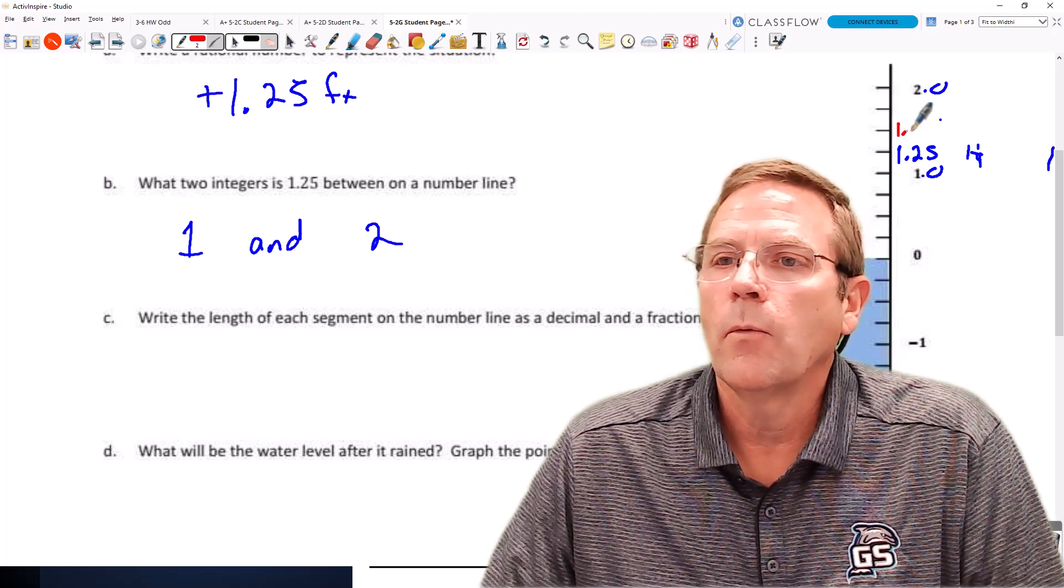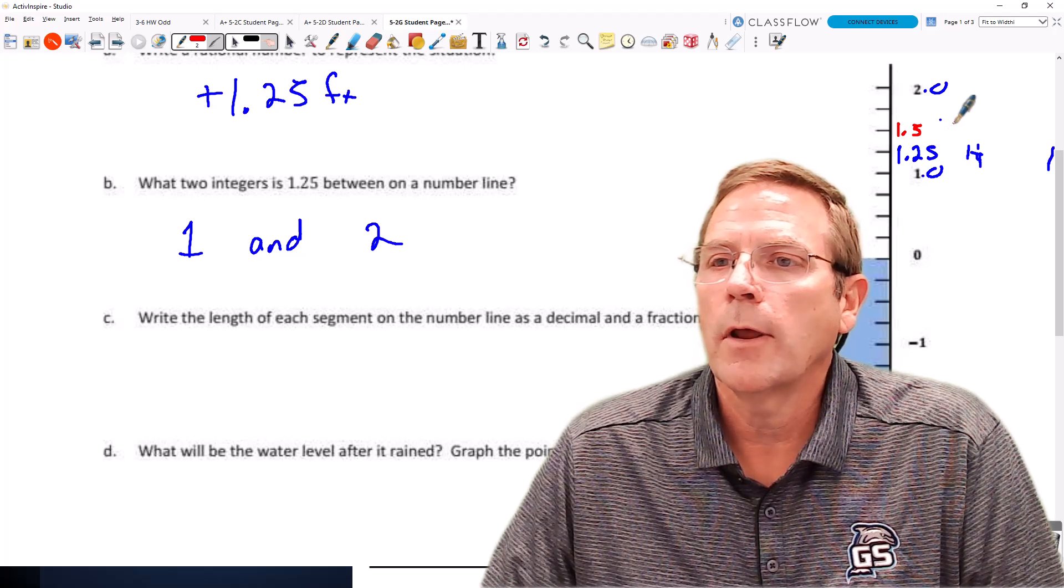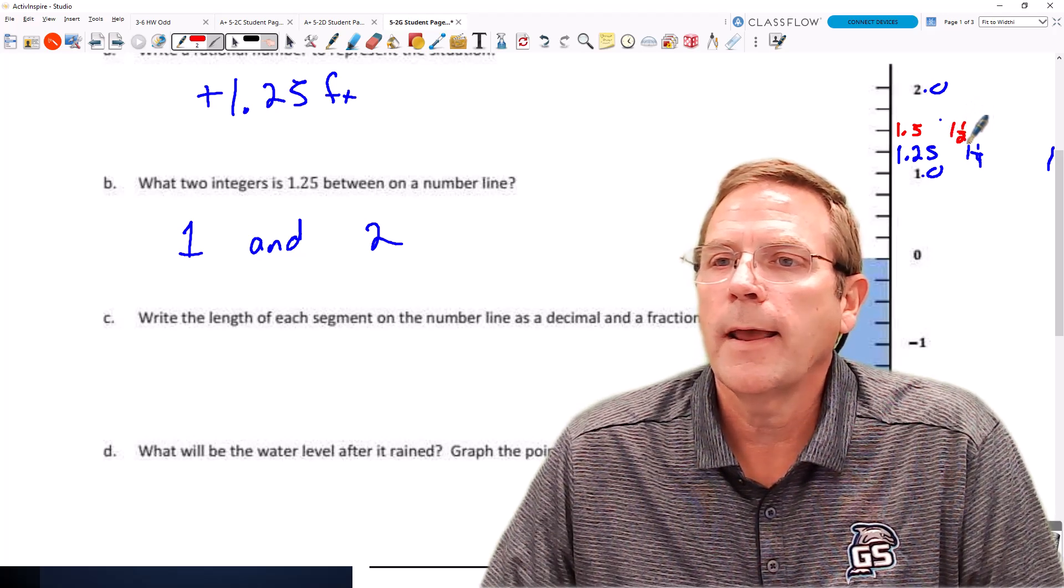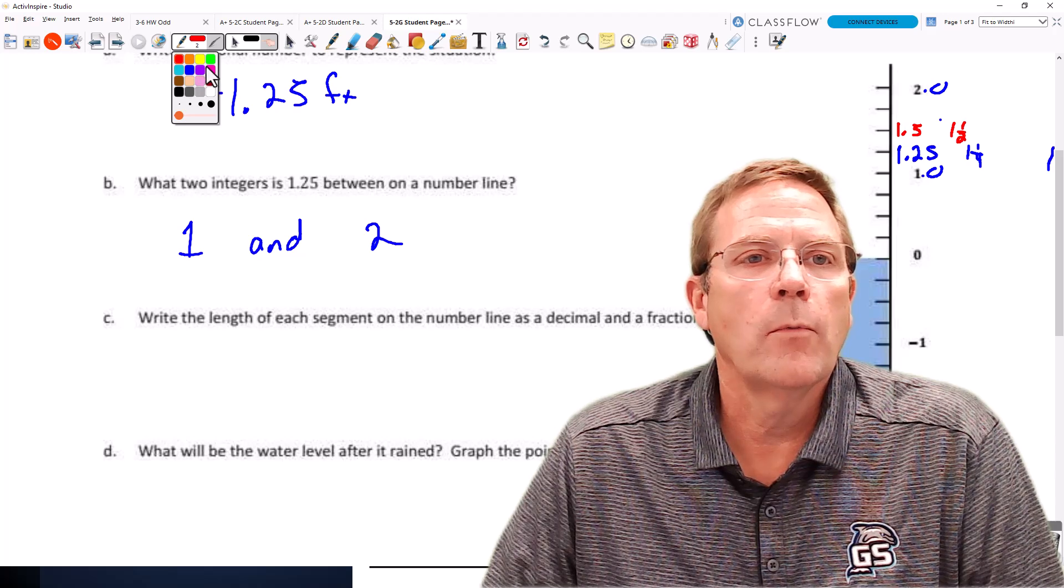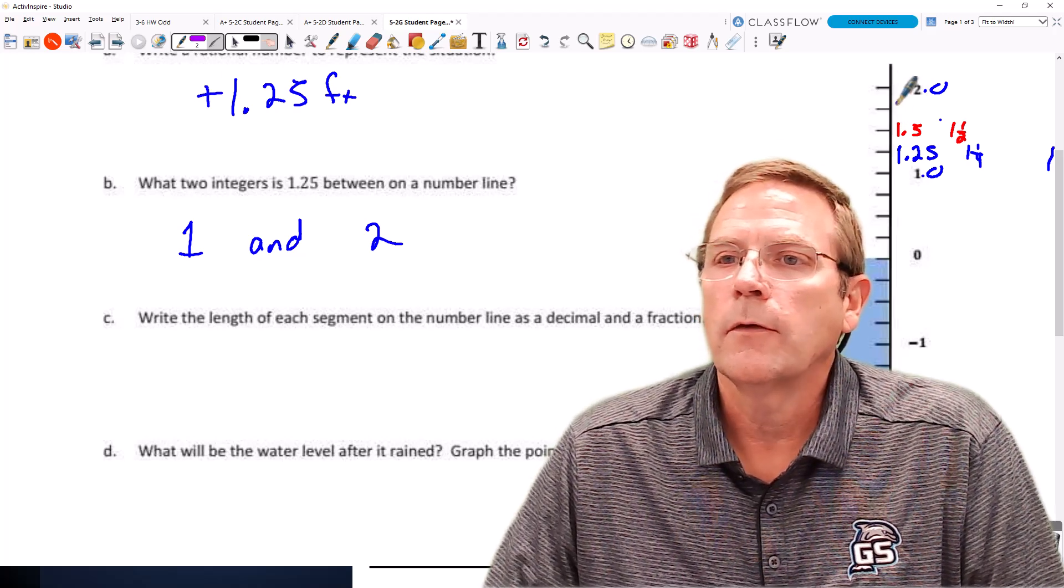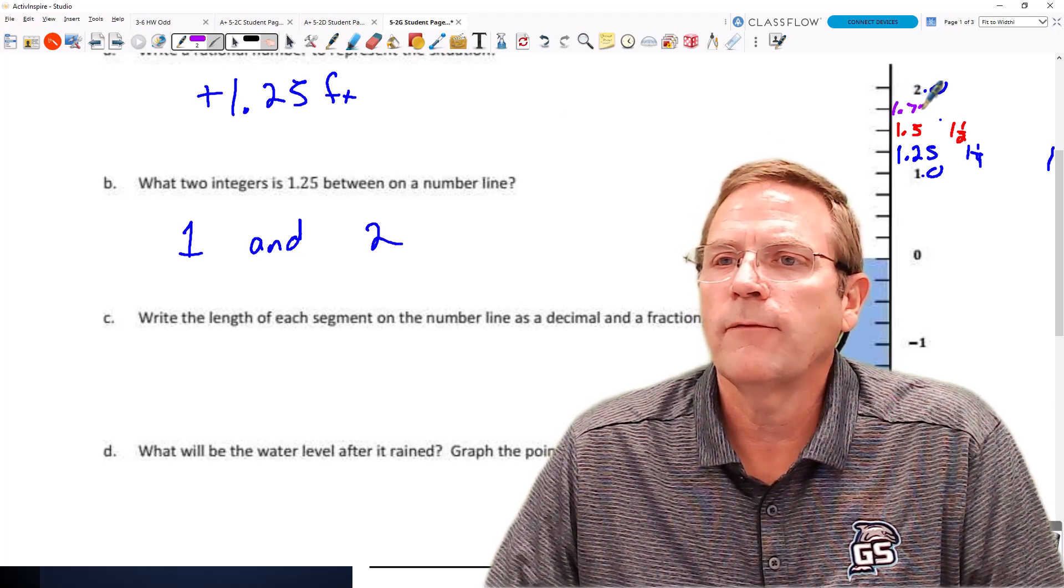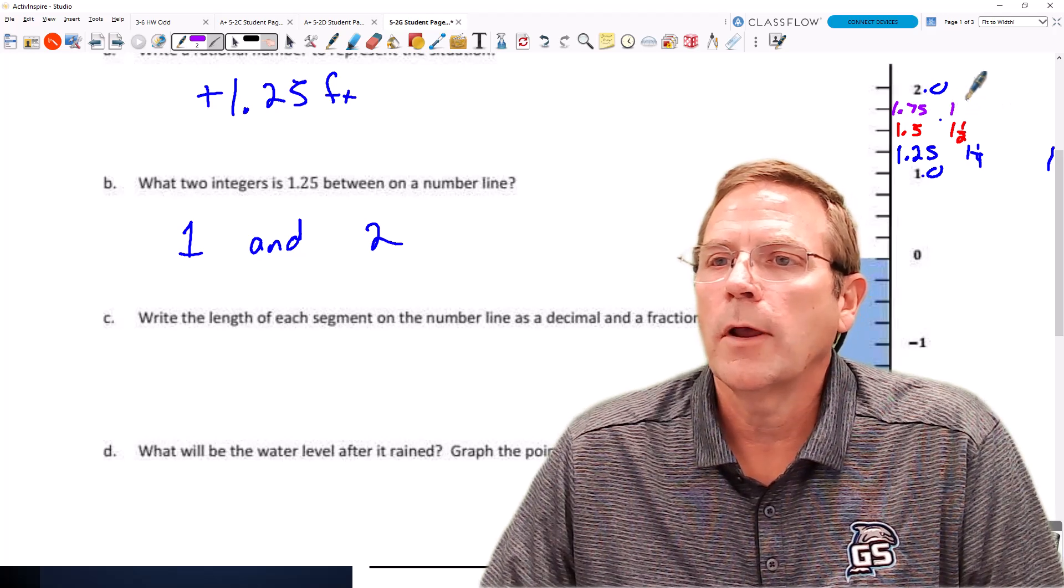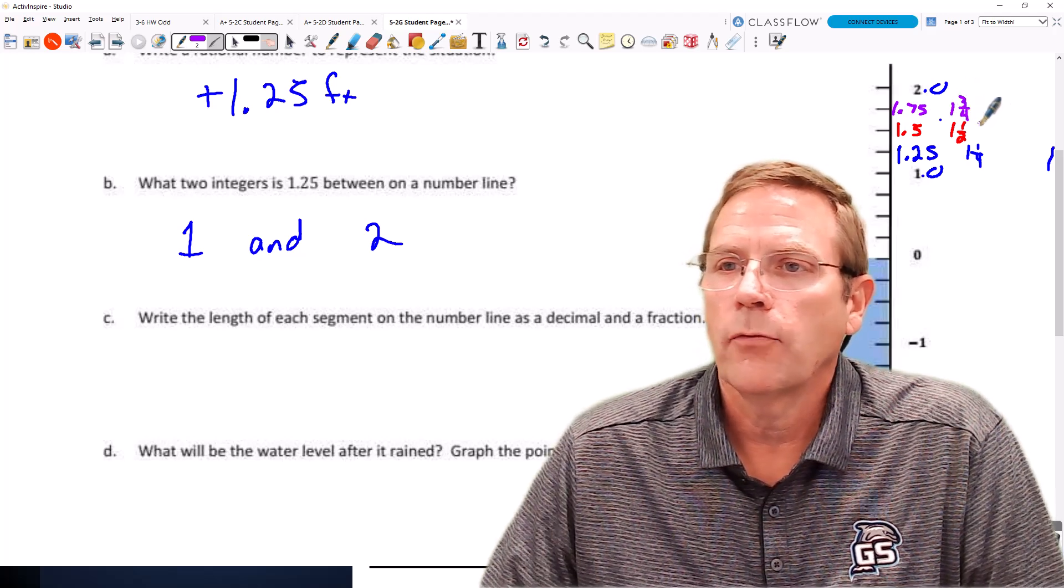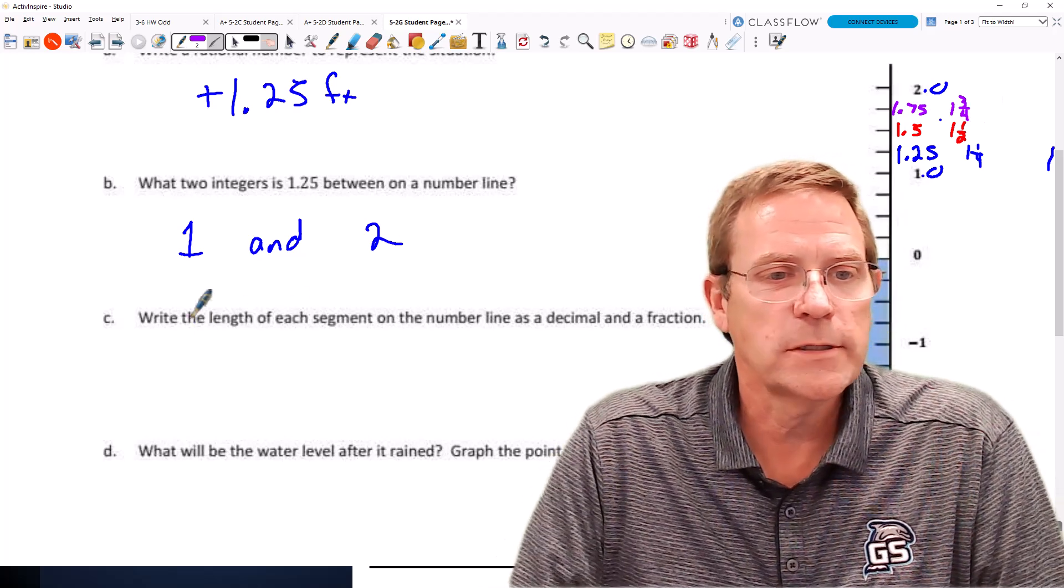This would be 1.5, also known as 1 and 1/2. And then we've got one more that we're going to squeeze in here. This is going to be 1.75, also known as 1 and 3/4. So that answered part C.